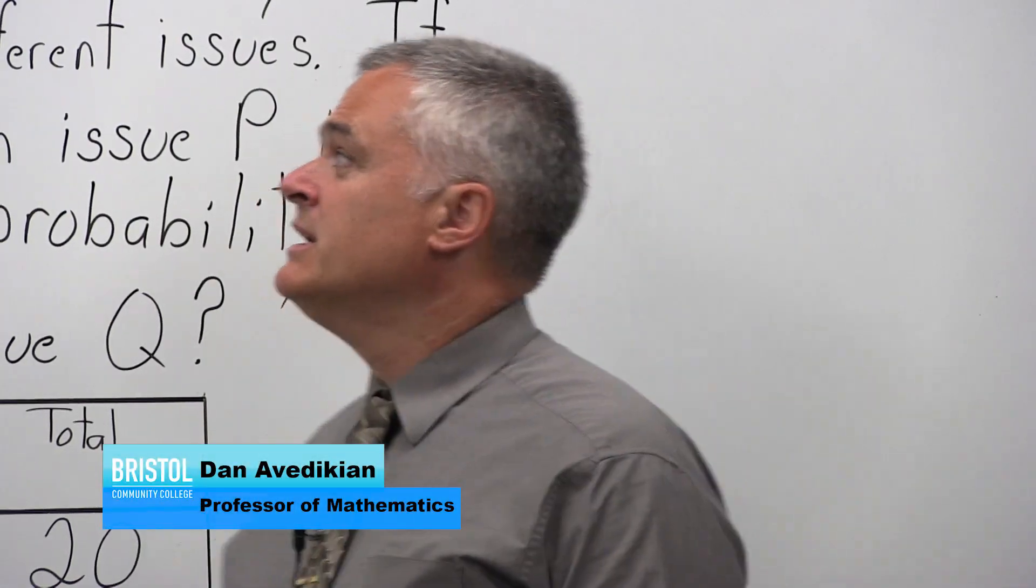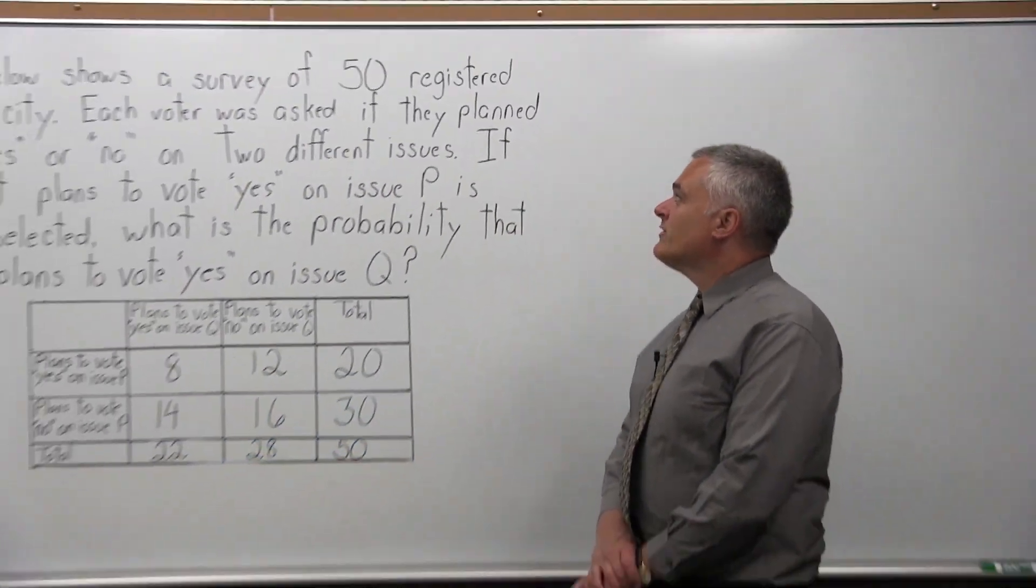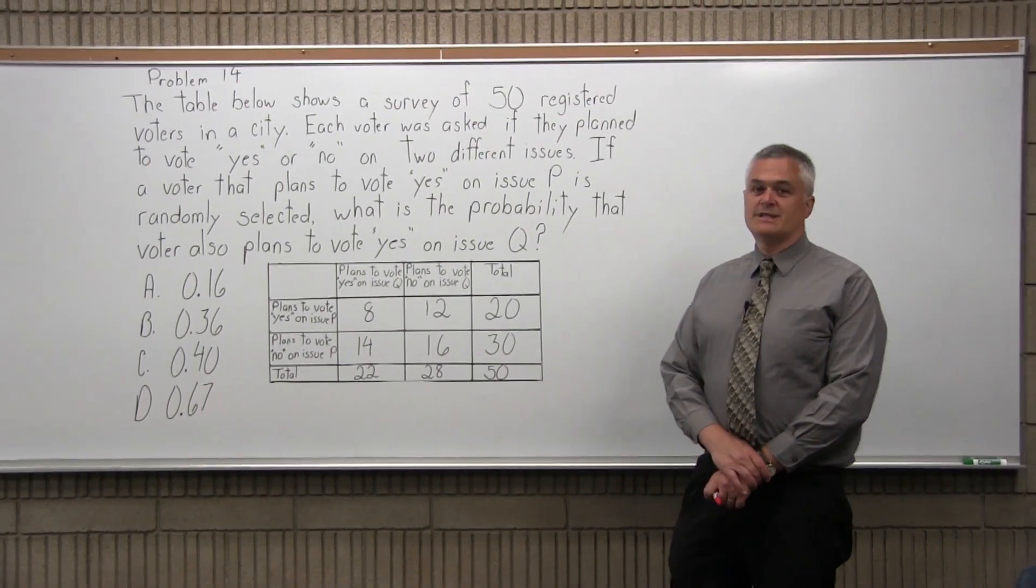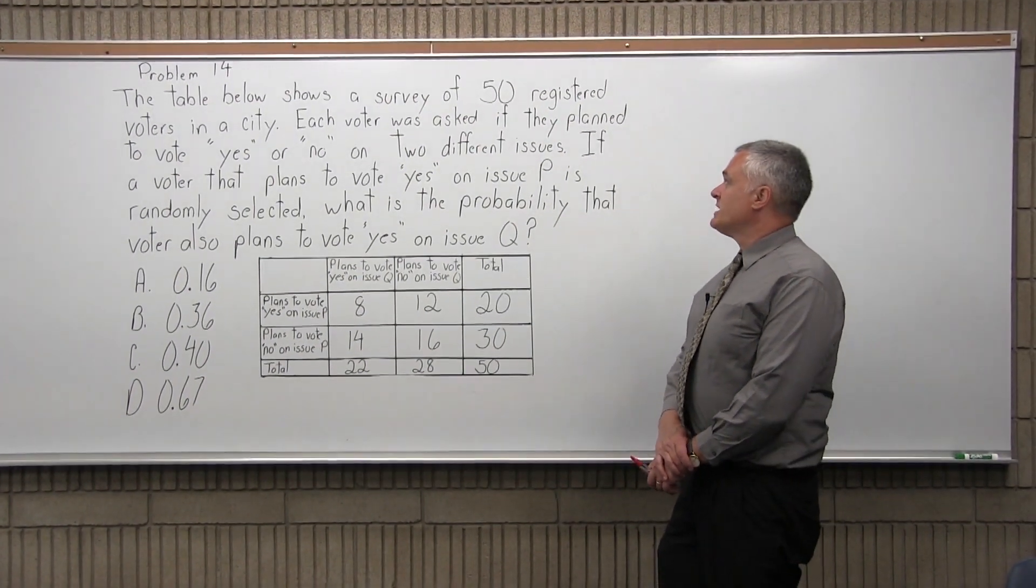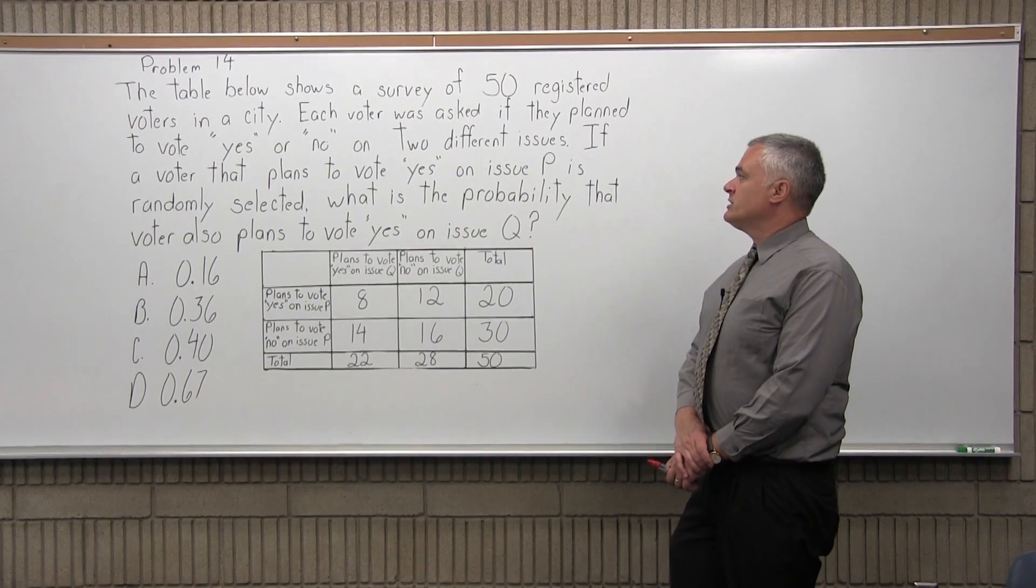This is problem 14. It says the table below shows a survey of 50 registered voters in a city. Each voter is asked if they plan to vote yes or no on two different issues.